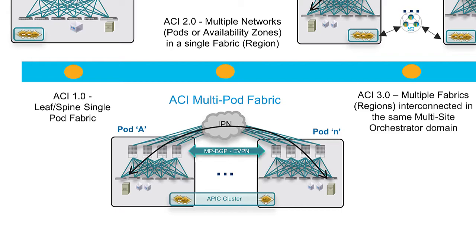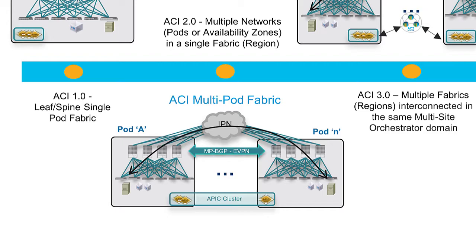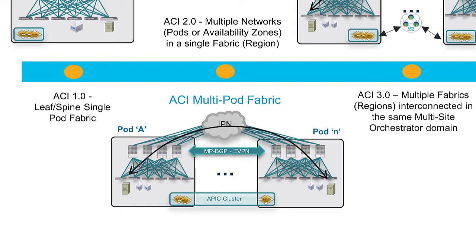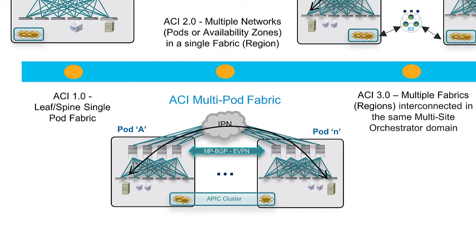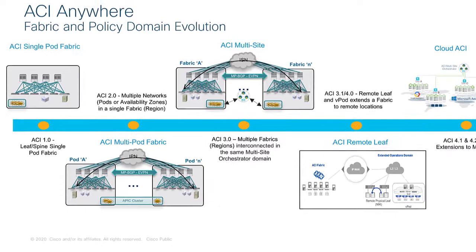With ACI 2.0, we delivered the first complete architecture called ACI Multipod. ACI Multipod allows interconnecting different ACI networks, called pods, using an external network called the Interpod Network. ACI Multipod represents a more scalable and resilient way of building an ACI fabric, but it still consists of a single management domain, because all the devices — leaf and spine — deployed across the different pods are under the control of the same APIC controller cluster.